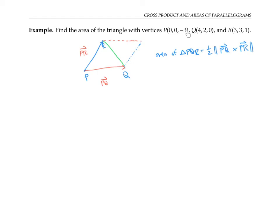Now I can use the coordinates of P and Q to get the components of vector PQ just by subtracting. So this is four minus zero, two minus zero, minus negative three, which gives four, two, three. Similarly, the components of PR can be found by subtracting the coordinates of R minus the coordinates of P. So that's three minus zero, three minus zero, one minus negative three, or three, three, four.